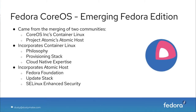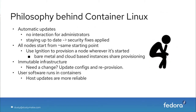Fedora CoreOS is an emerging Fedora edition that came from the merging of two communities: CoreOS Inc.'s Container Linux community and Project Atomic's Atomic Host community. It incorporates the Container Linux philosophy, provisioning stack, and cloud-native expertise, as well as Atomic Host's Fedora foundation, update stack, and enhanced security with SELinux.